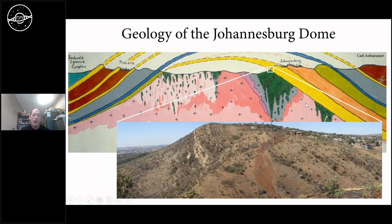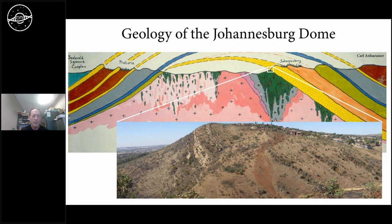Being based in Johannesburg, these rocks are quite well exposed in this area. Johannesburg is situated on sedimentary rocks that are three billion years old, part of the Dominion and Witwatersrand sedimentary succession, and underlying these are ancient greenstone belts — basically seen in this photo of an area in the Johannesburg region. We can study these very old rocks without having to travel far.